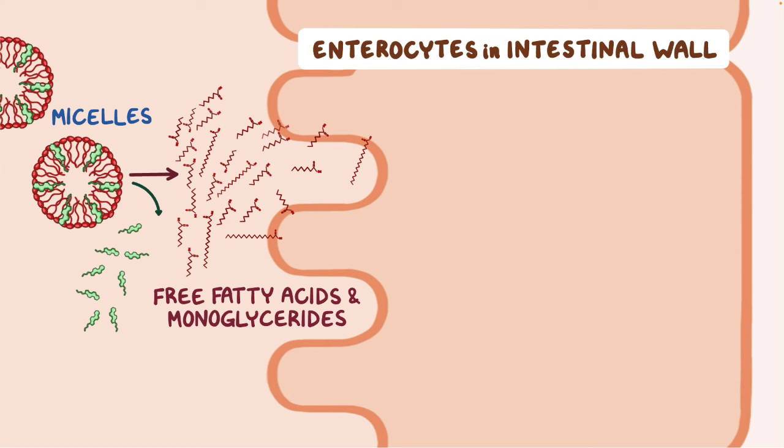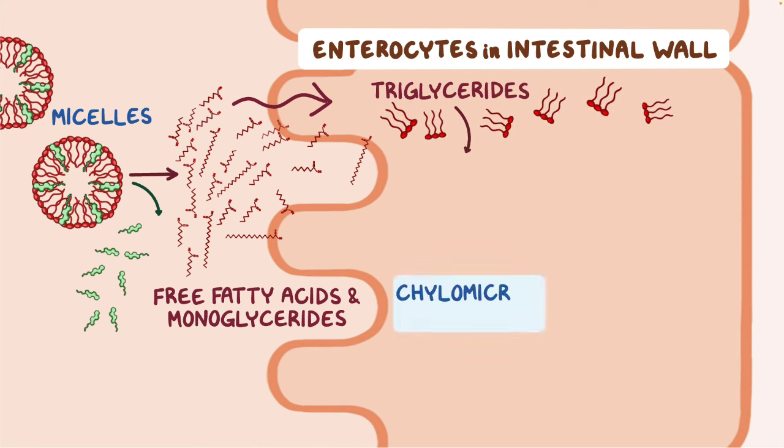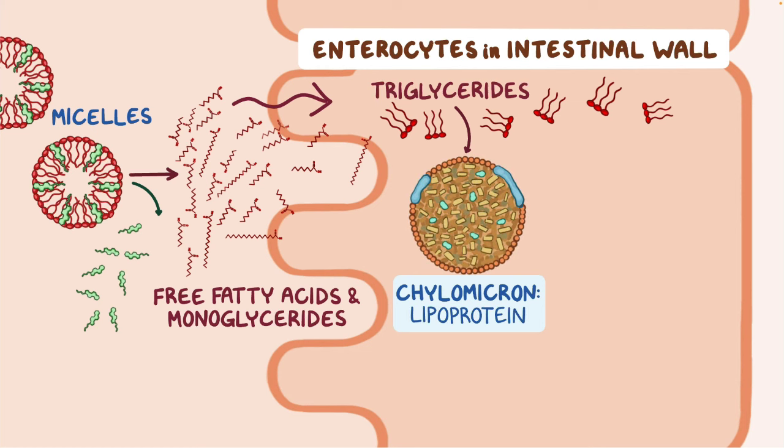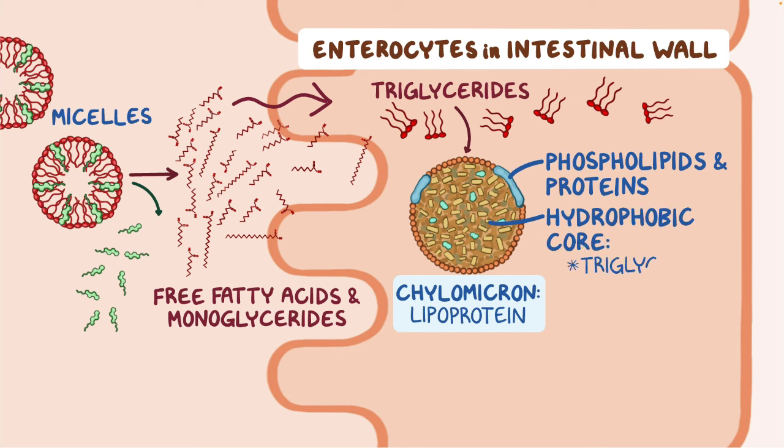Inside the enterocyte, the fatty acids and monoglycerides reassemble into triglycerides, and these get packed into a larger structure called a chylomicron. The chylomicron has lipids and proteins, so it's a lipoprotein. It has an outer membrane with phospholipids and proteins, and a hydrophobic core that has triglycerides, cholesterol, and fat-soluble vitamins A, D, E, and K.